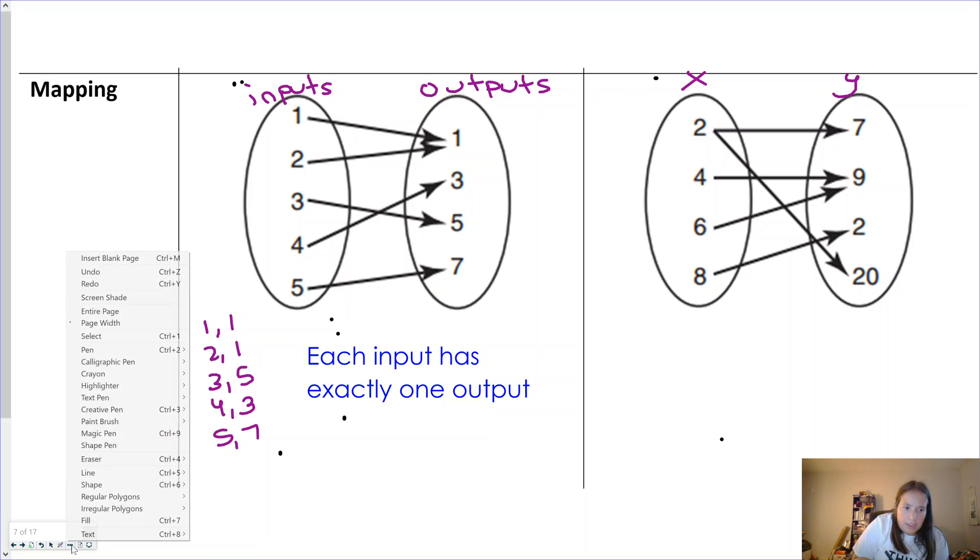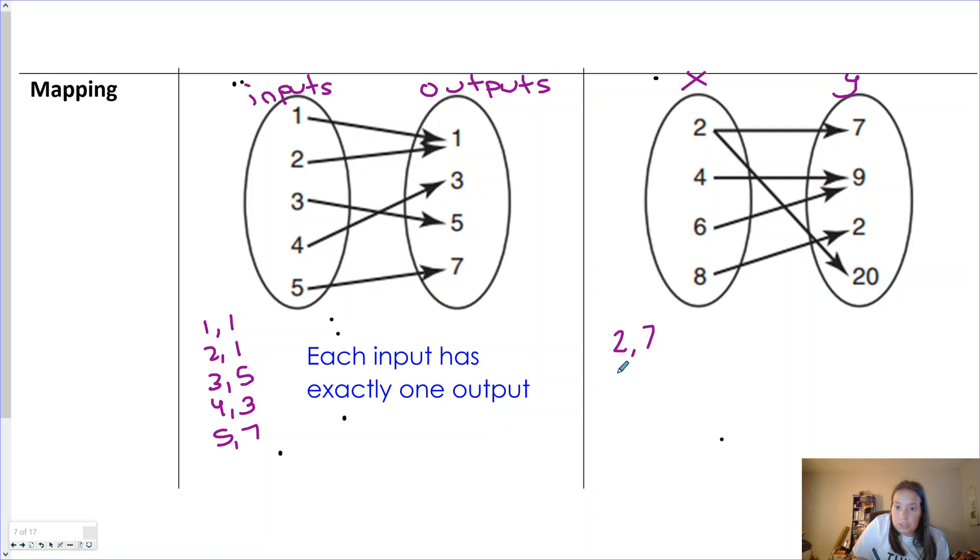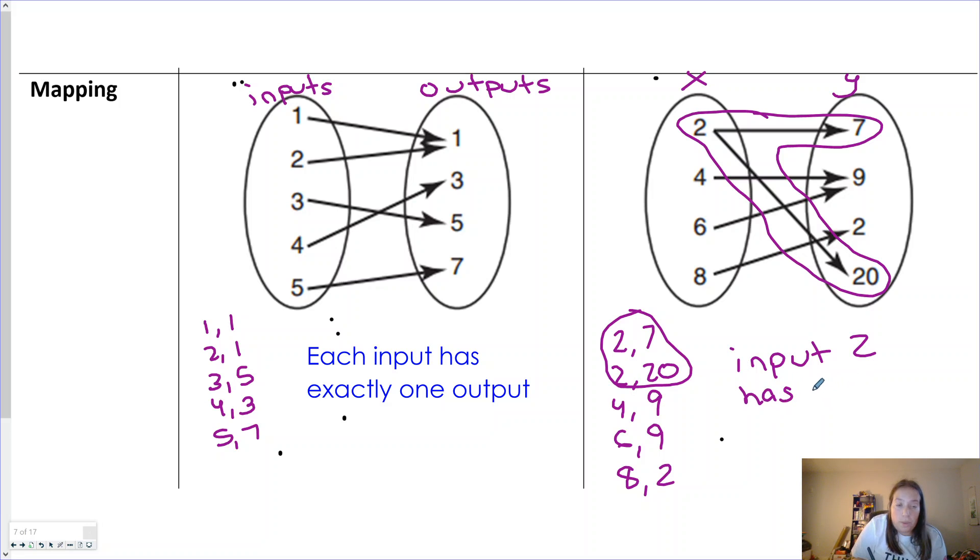But over here, if we were to list the points the exact same way, we see (2,7), (2,20), (4,9), (6,9), and (8,2). And we realize that this is a problem. The input 2 has two outputs. And you need to be specific about which input is violating the definition. Input 2 has two outputs, 7 and 20. Be as specific as you can.